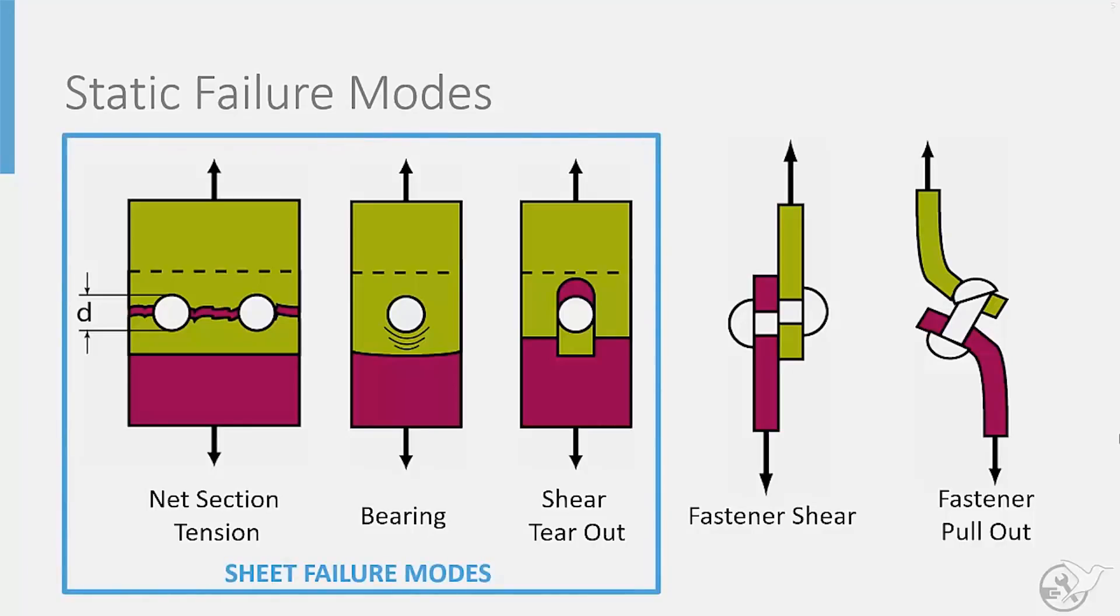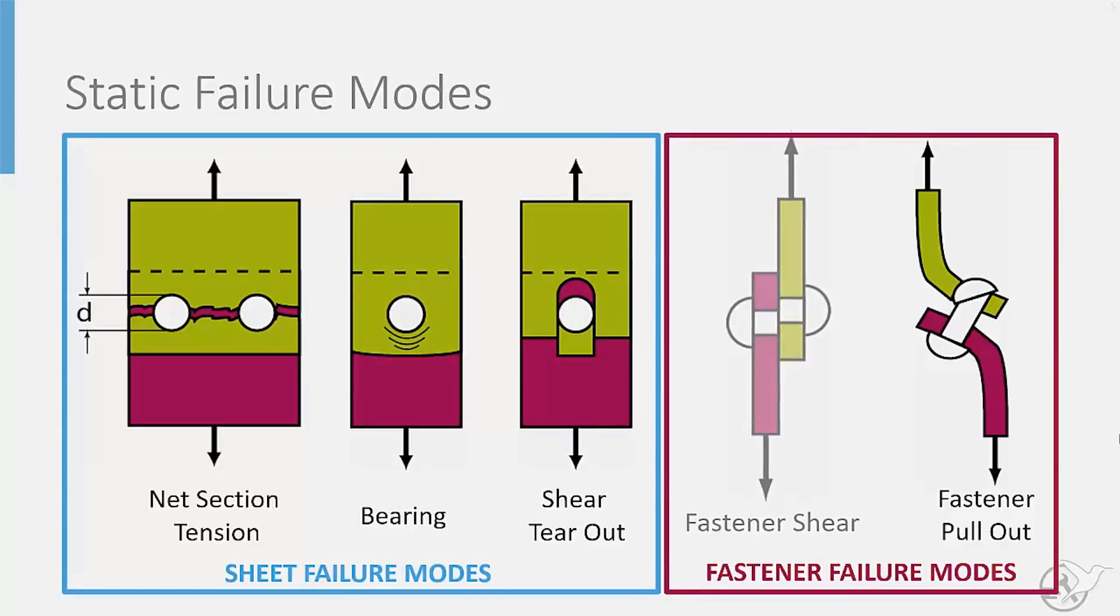There are five main failure modes to consider when looking at the static failure of shear type joints. Three failure modes related to sheet material known as net section tension, bearing, and shear tear-out failure, and two failure modes related to the fastener known as fastener shear and fastener pull-out failure.